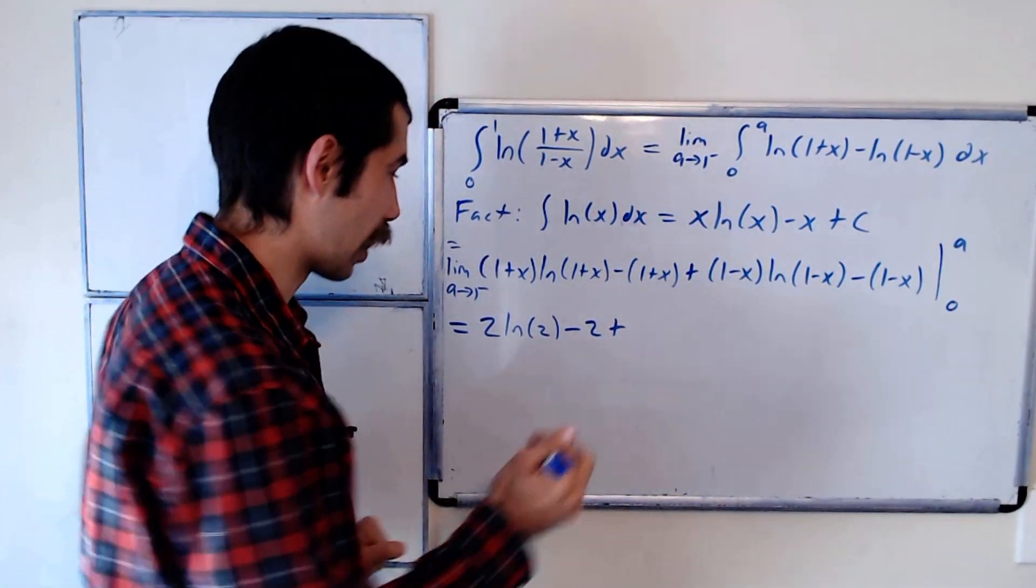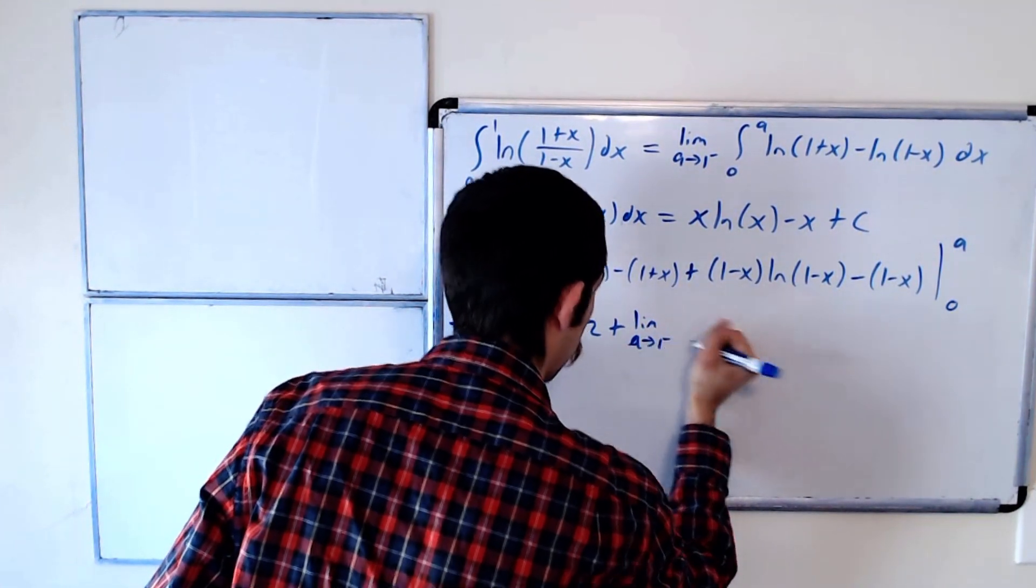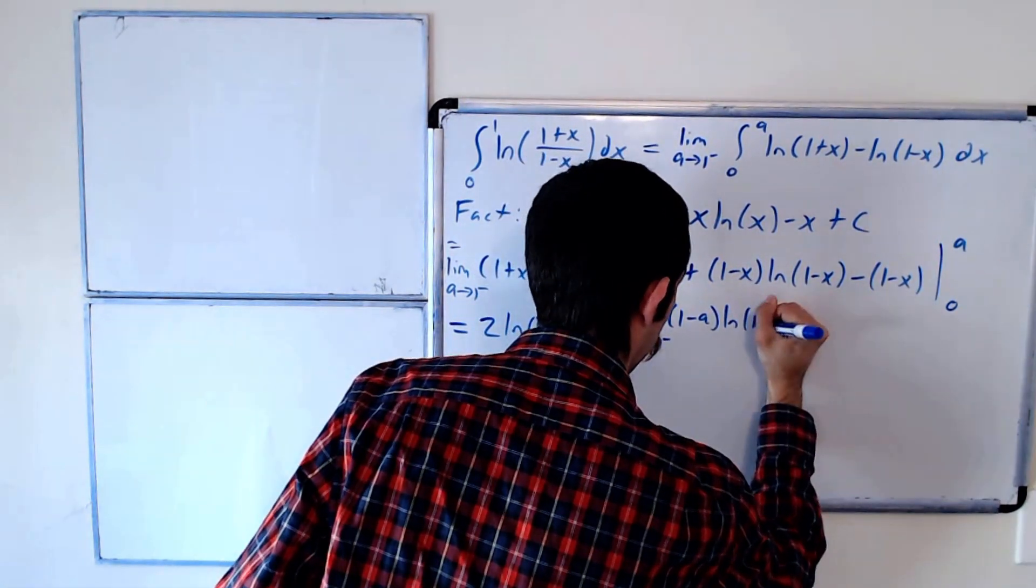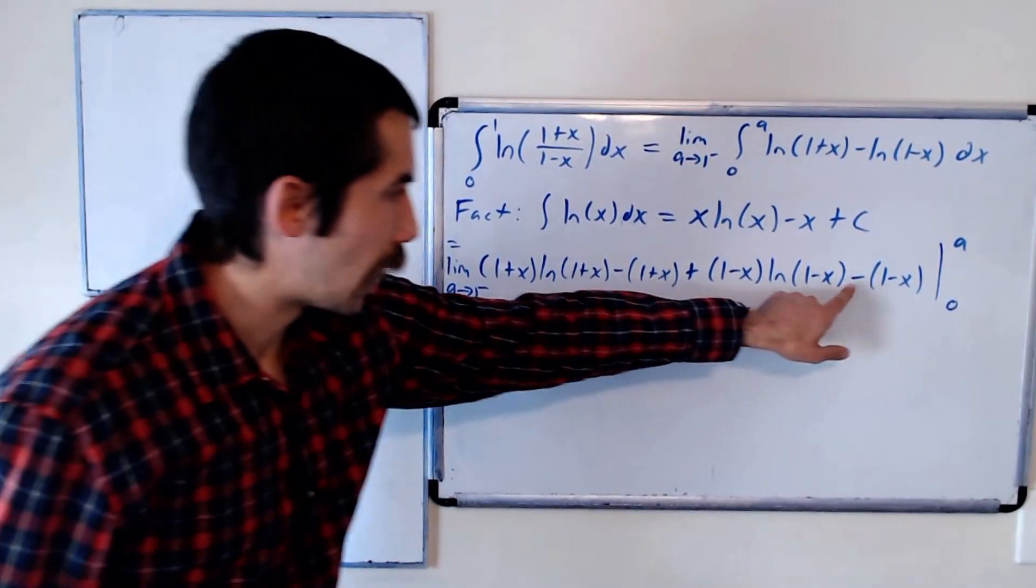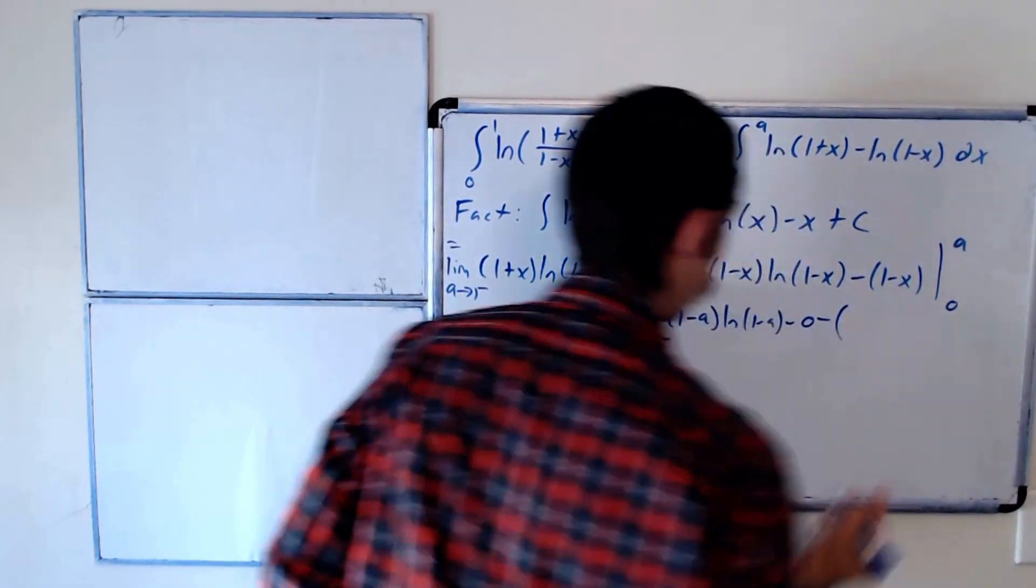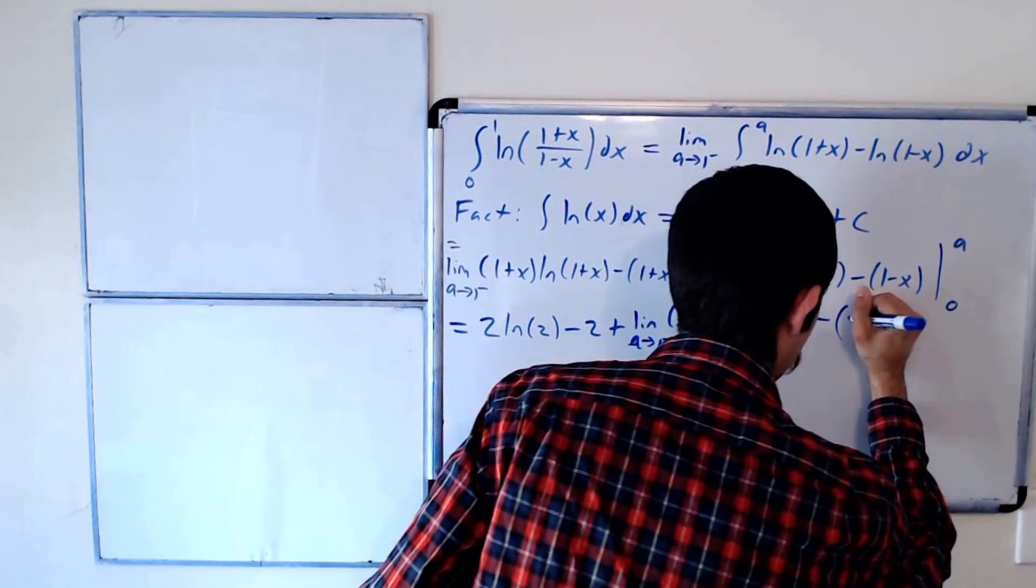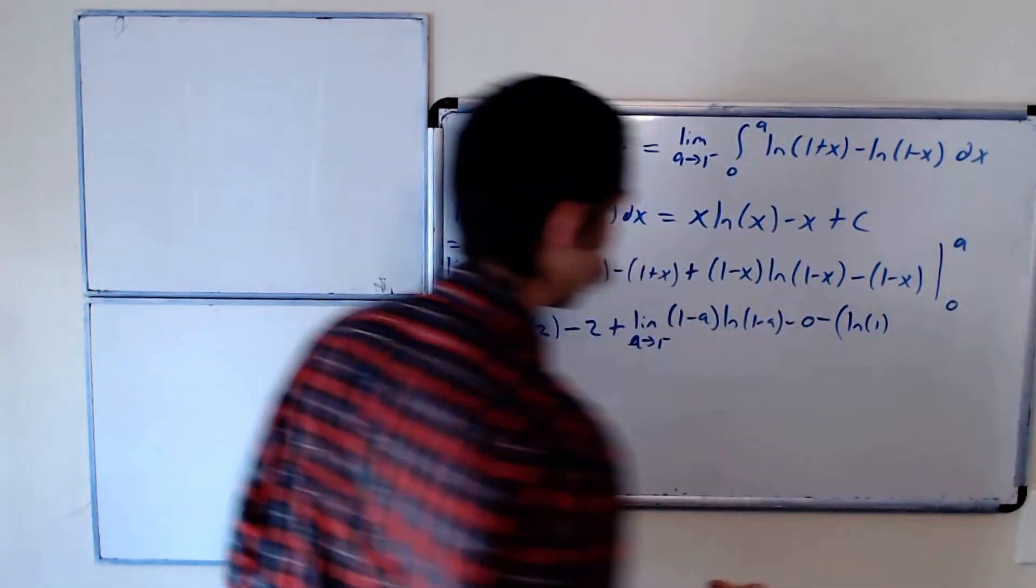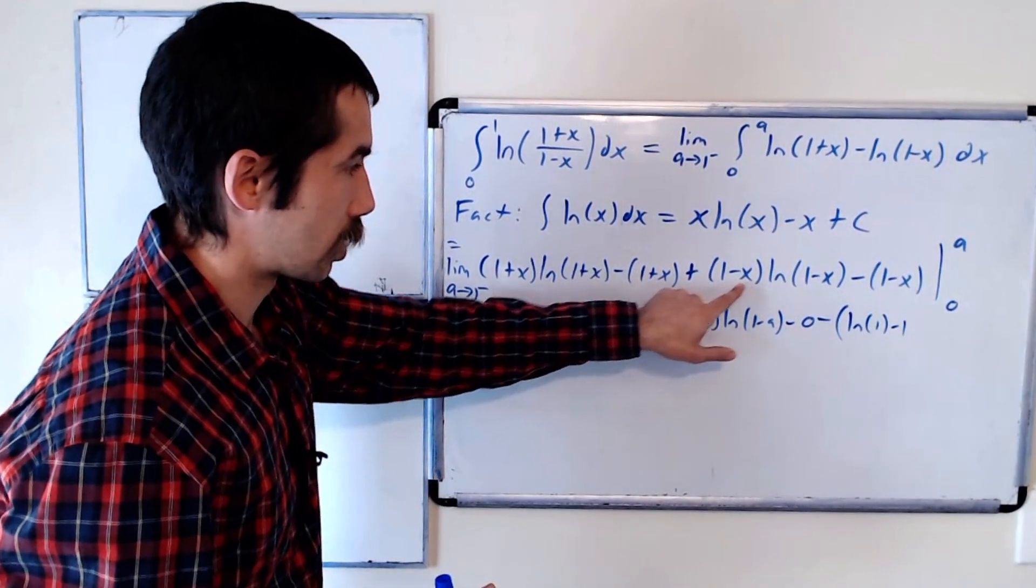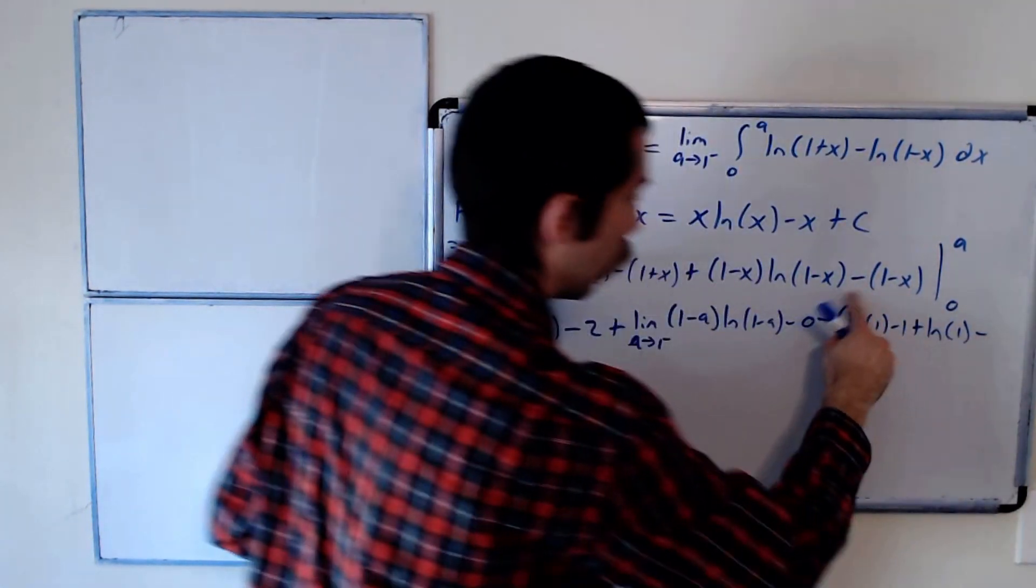So we're going to have the limit, as a goes to 1 from the left, of 1 minus a ln of 1 minus a, minus 0. And then when we plug in 0, we get 1 times ln of 1, which is ln of 1, which is 0, minus 1, plus 1 ln of 1, minus 1.